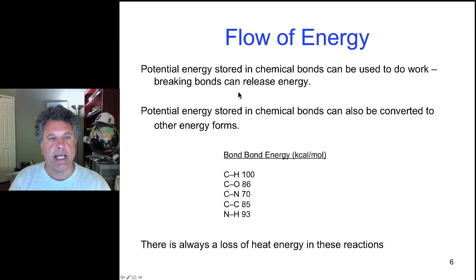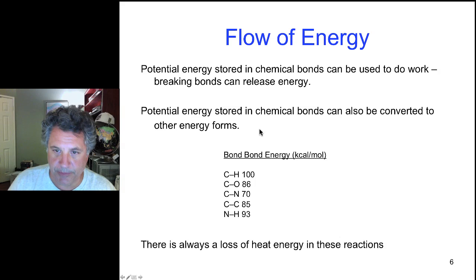So in biological systems, potential energy to do work can be stored in chemical bonds. And by breaking chemical bonds, that can release energy that can be used to do work in biological systems. Potential energy stored in chemical bonds can be converted to other forms—mechanical energy, for example, heat energy as well.